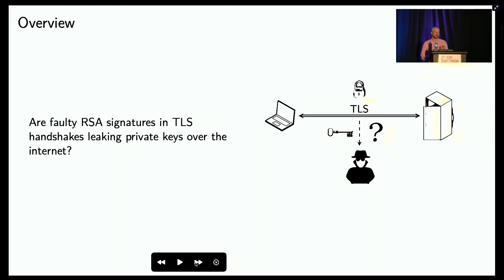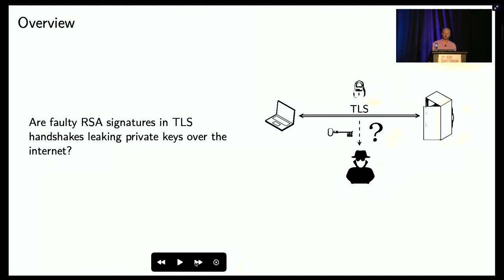Previous work has shown that active attackers can exploit faulty RSA signatures to recover private keys. What we're interested in here is whether such an attack can be carried out completely passively, and whether servers are currently leaking their RSA keys on the internet.